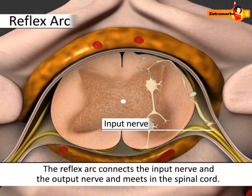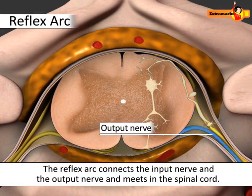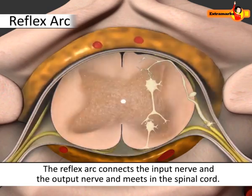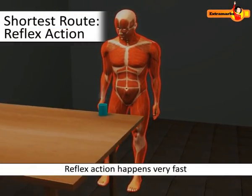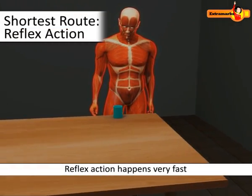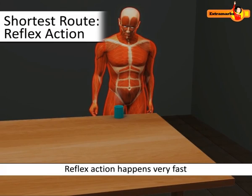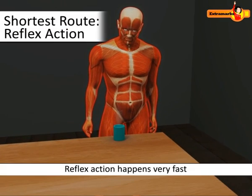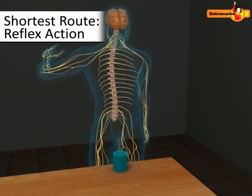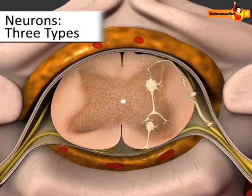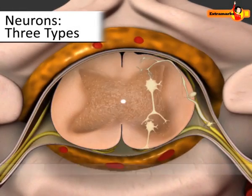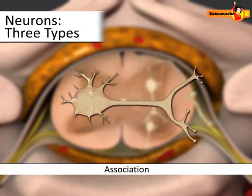The nerve pathway of a reflex action is called the reflex arc. The reflex arc connects the input nerve and the output nerve, and they meet in the spinal cord. Reflex action happens so fast because it undergoes the shortest route. The reflex arc involves three types of neurons: sensory, association...